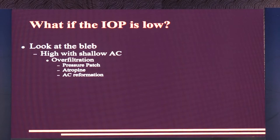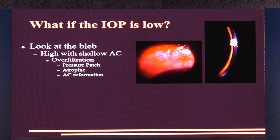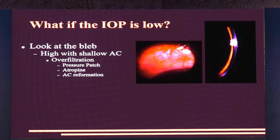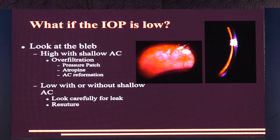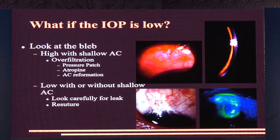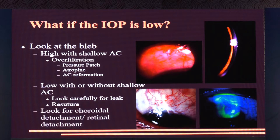If IOP is low, look at the bleb first. A high bleb with a very shallow AC means it's filtering too much — manage with a pressure patch, atropine, or AC reformation. AC reformation is usually waited for until there's lenticular or pupillary touch, or a very shallow AC; peripheral corneal or corneal-iris touch does not require it. If the bleb is not formed, check carefully for a leak. A frank leak requires resuturing and return to the OR. Also look for choroidal and retinal detachment in every case of hypotony following trabeculectomy.